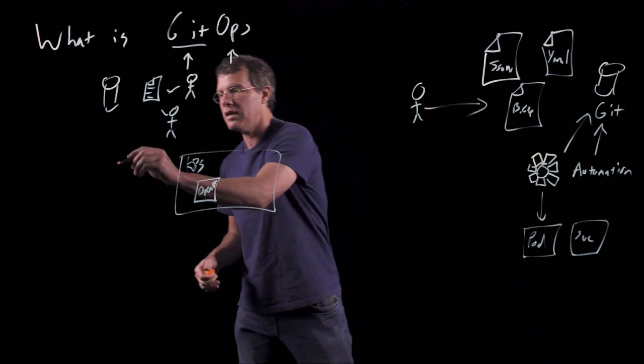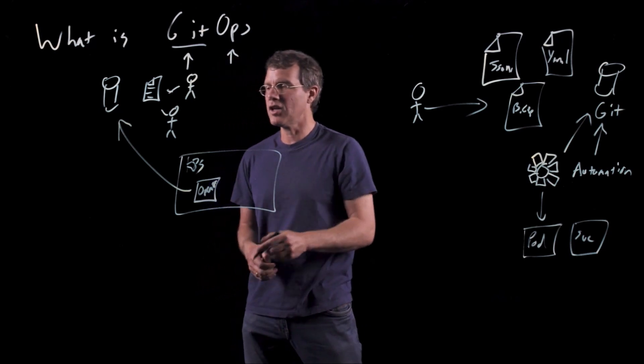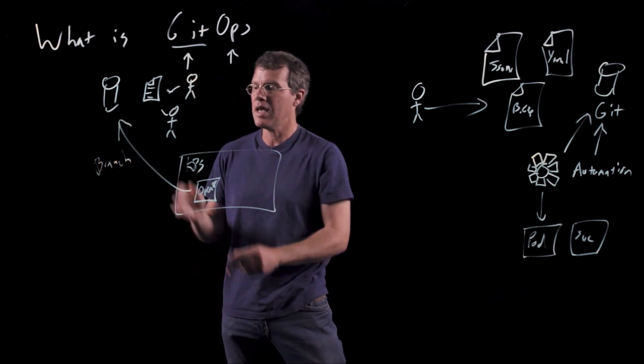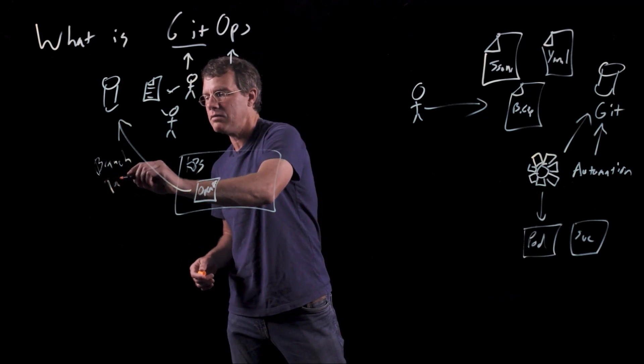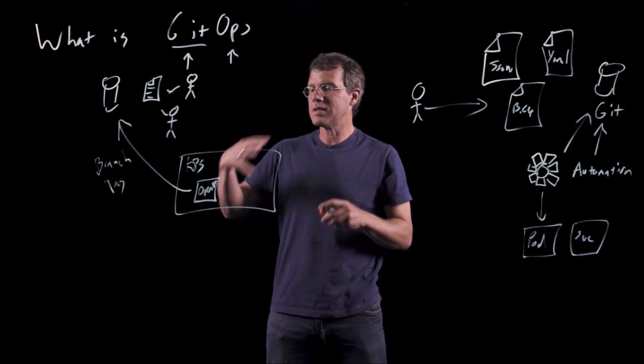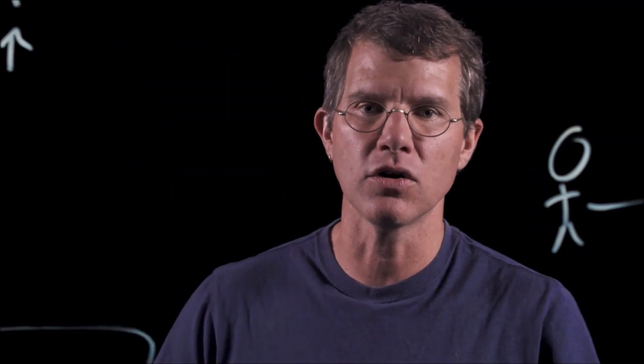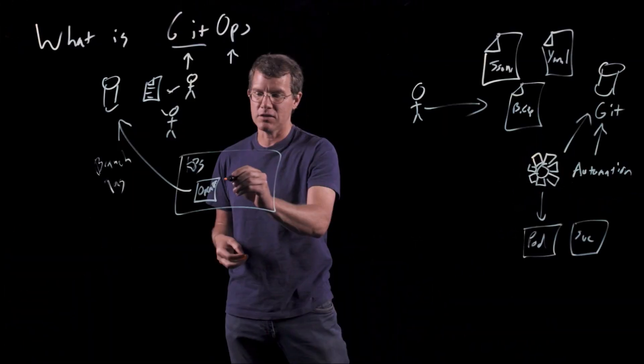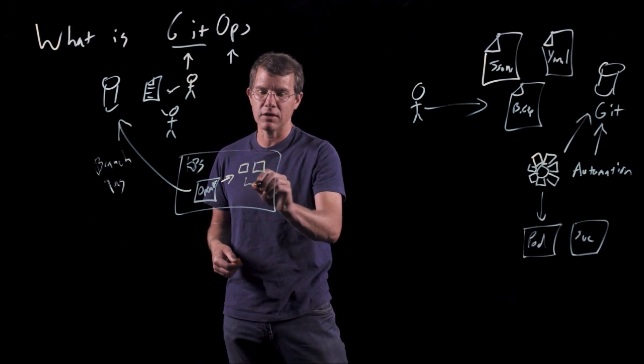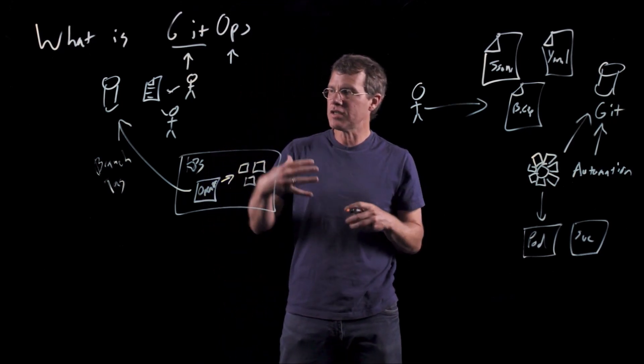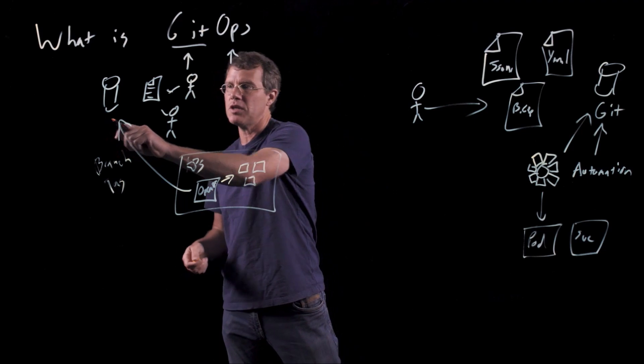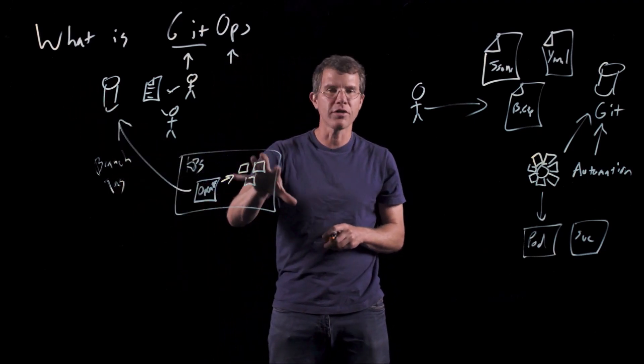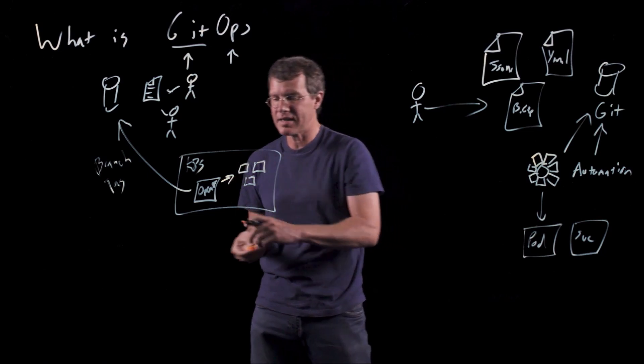So this operator is listening to the Git repository. It's listening at a particular branch, and this is important, we'll see in a little bit, and a particular tag within that branch. And what it's basically doing is whenever it notices a change between what it sees inside of the cluster, so it's looking at the various pieces that are inside of the cluster, and when it notices a change between the description of what should be in the cluster that's in the Git repository and the actual things that are inside of the cluster, it takes an action.